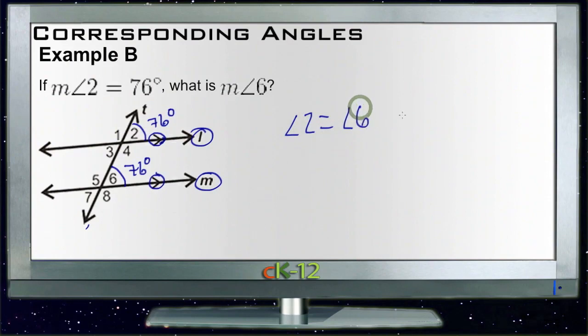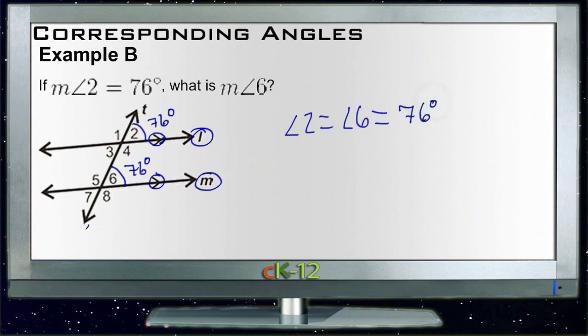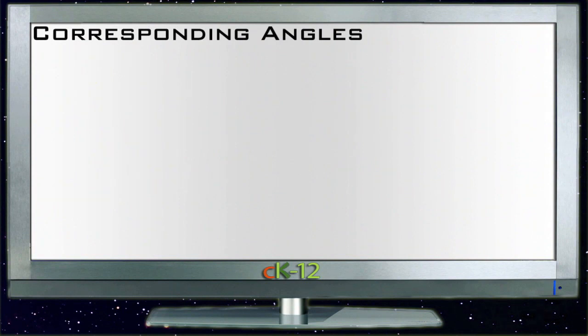So the measure of angle two is equal to the measure of angle six, and they're both equal to 76 degrees.